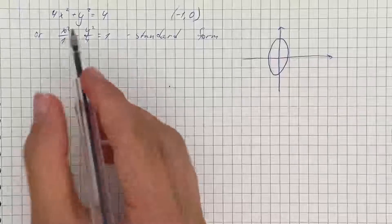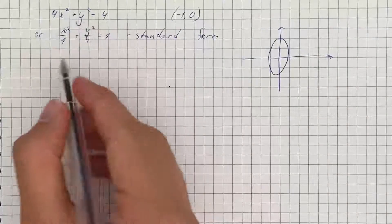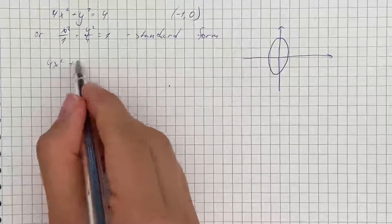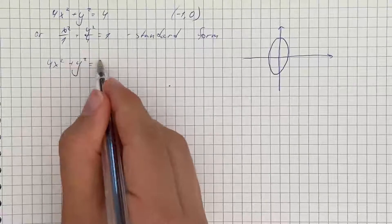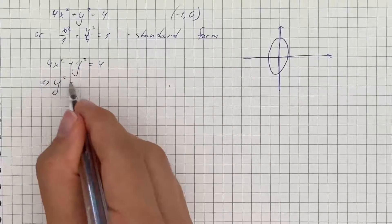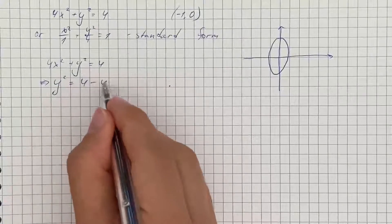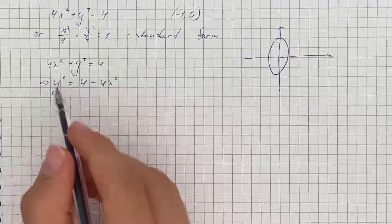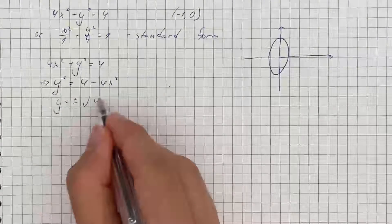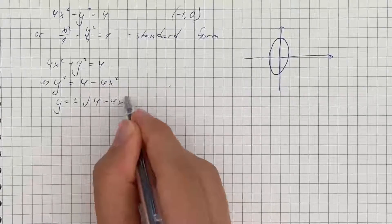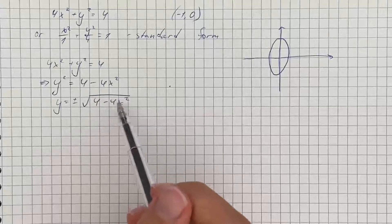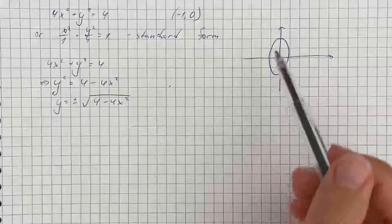We're going to start by isolating y from this equation. We write 4x squared plus y squared equals 4, and leaving only y on the left side, that's going to be y squared equals 4 minus 4x squared. Taking the root on both sides, we get y equals positive or negative square root of 4 minus 4x squared. We're going to use just the positive square root and get the other point by symmetry.